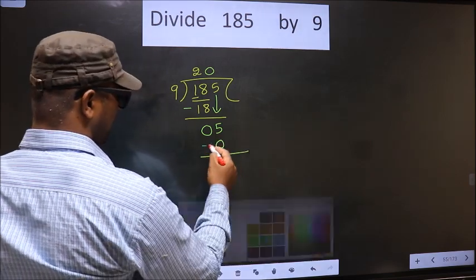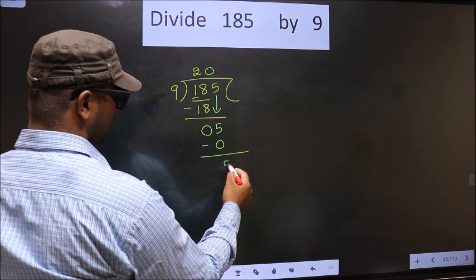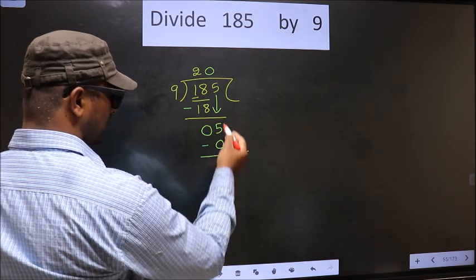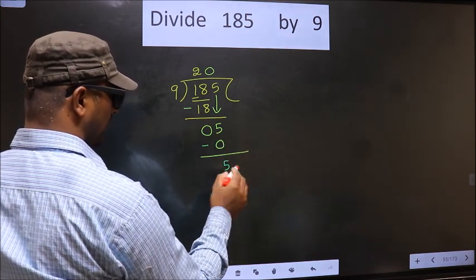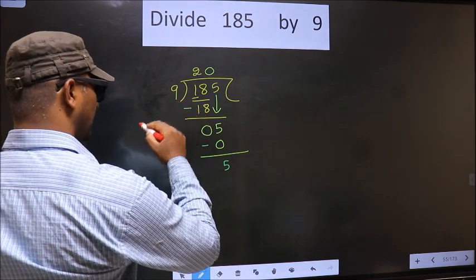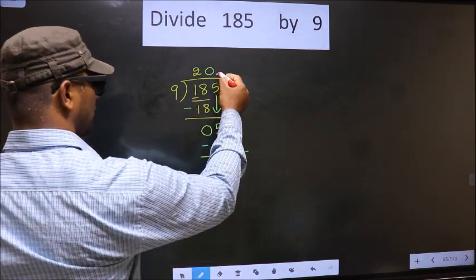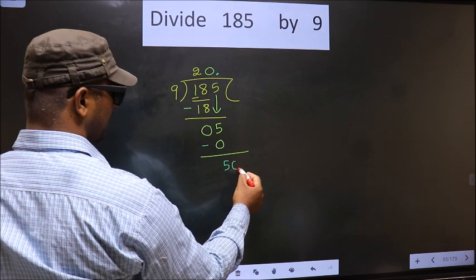Now you subtract. 5 minus 0 is 5. Over here, we did not bring any number down. And 5 is smaller than 9. So now you can put a decimal point and take 0 here.